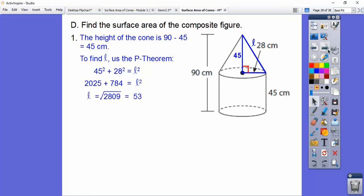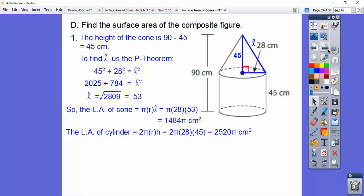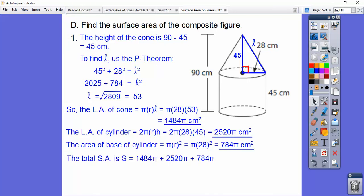So when we square root that, we get 53. I did not know that was a P triple. So 28, 45, 53 is another P triple. Anyways, the lateral area of a cone, πRL. So we get 1,484π centimeters squared. The lateral area of the cylinder is 2πRH. So we get 2,520π centimeters squared. And finally, the circle downstairs is πR². So we get 784π. So the total surface area, we add those numbers together, and we get 4,788π centimeters squared.